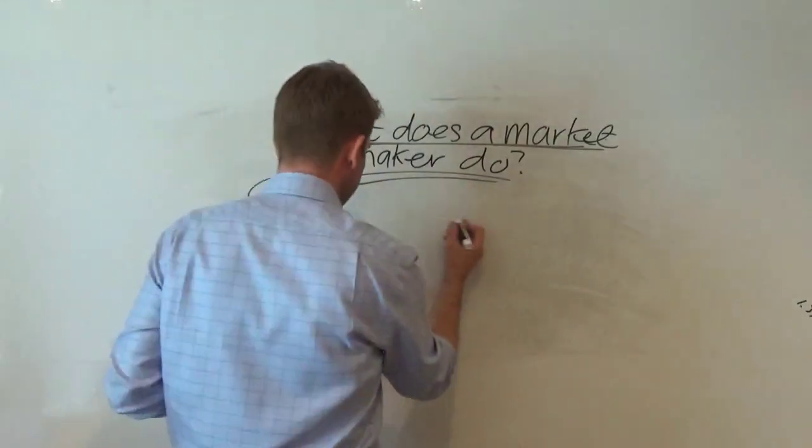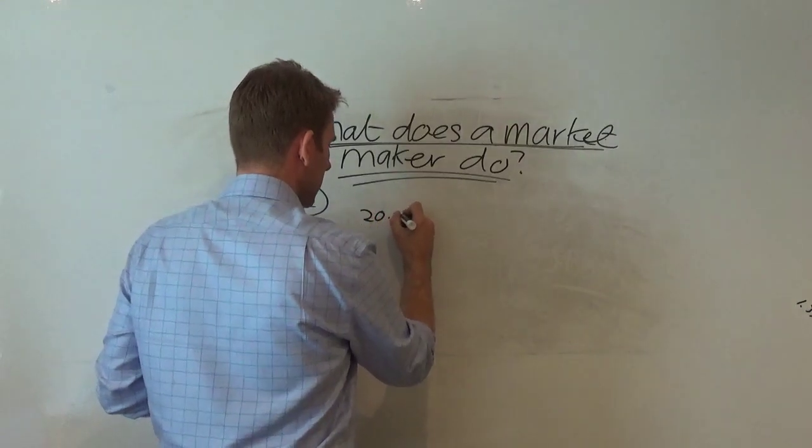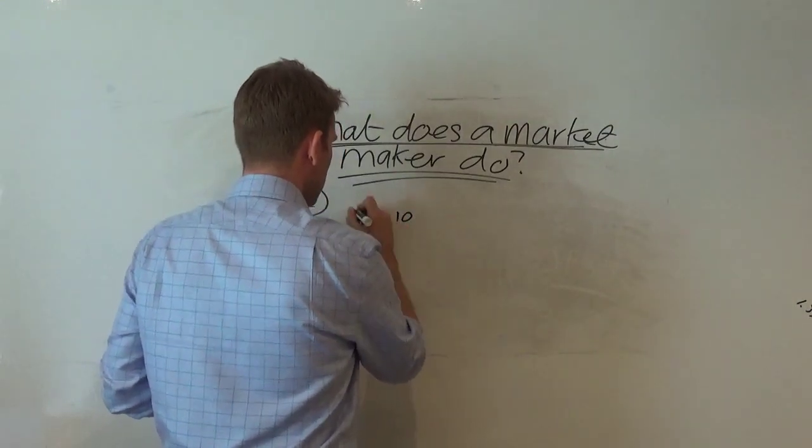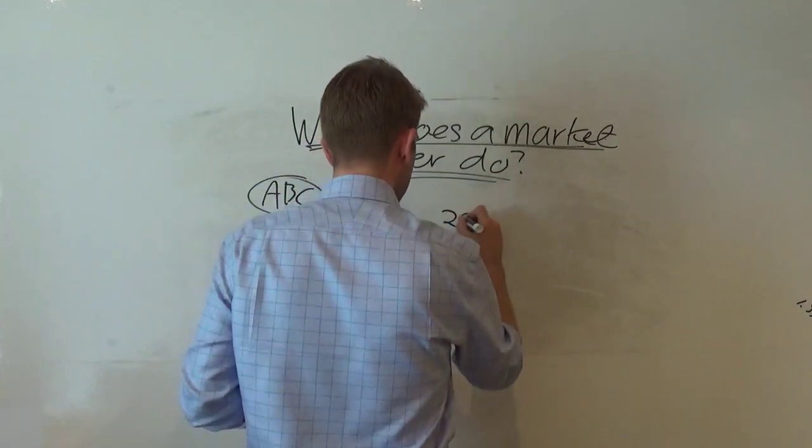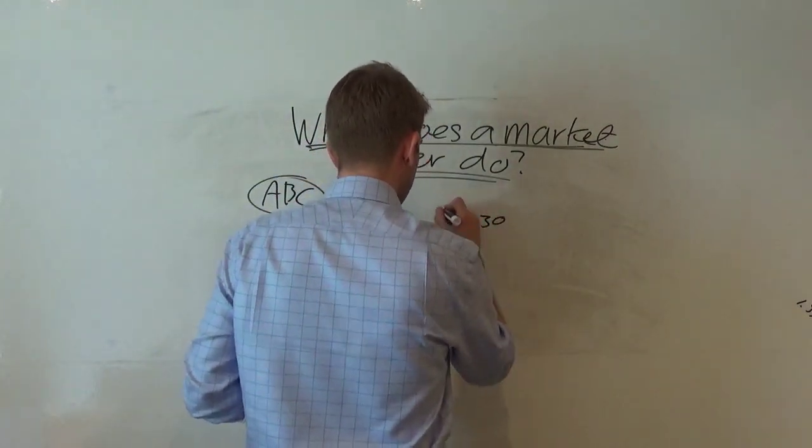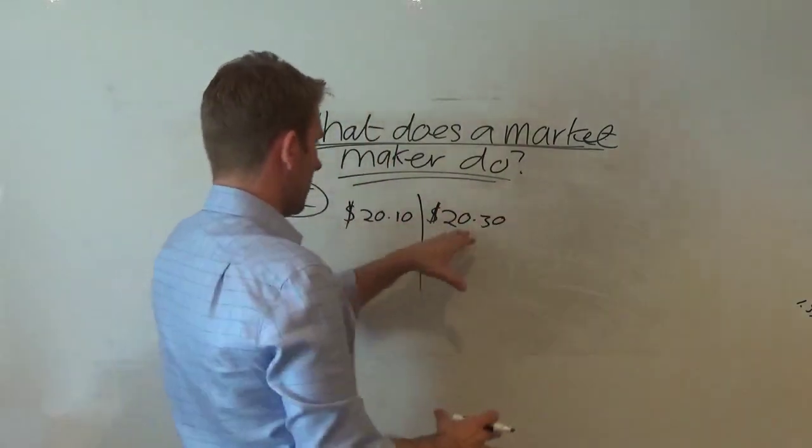So let's say you're a market maker and let's say you have a price of $20.10, and I'm going to use dollars but I'm more familiar with the UK side of stuff, but let's use dollars just for example. Let's say that's the spread you're offering as a market maker.